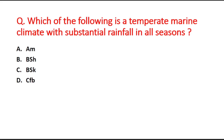The correct answer for the savannah climate question is option C, tropical wet and dry climate. The code Cf denotes the temperate marine climate with substantial rainfall in all seasons according to the Köppen climate classification.